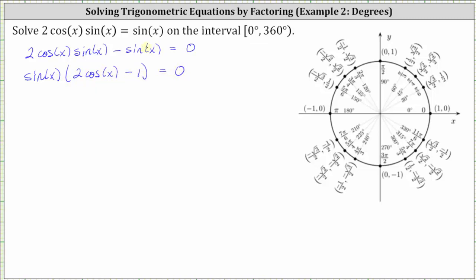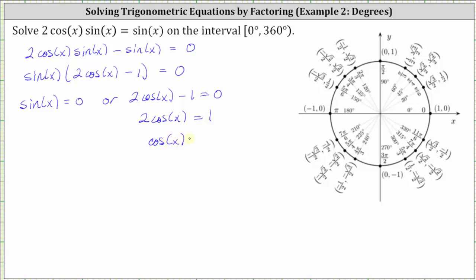Notice when we factor out sine x from sine x, it does leave us with a one. Now the product on the left is equal to zero where sine x is equal to zero, or where two cosine x minus one is equal to zero. The equation sine x equals zero is already solved, so the next step is to solve two cosine x minus one equals zero for cosine x. Adding one to both sides gives us two cosine x equals one, and dividing both sides by two gives us cosine x equals one half.